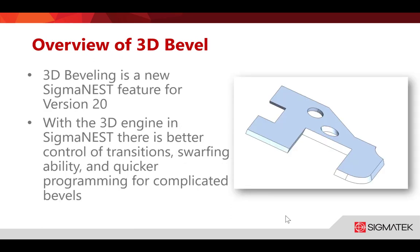3D beveling is a new SigmaNest feature for version 20 — the first version it appears in. This utilizes our 3D engine inside SigmaNest, providing better control for transitions and swarfing, and it's quicker for programming more complicated bevels. If you've had issues programming certain bevels such as blind bevels, or want to use swarfing to eliminate corner loops, this is a great feature for that.